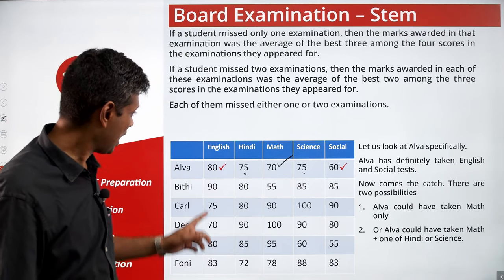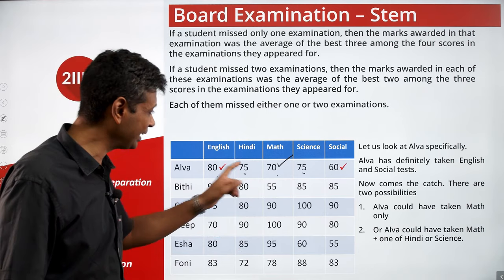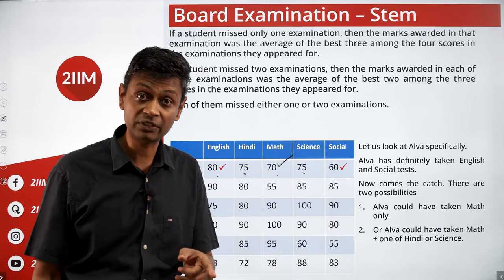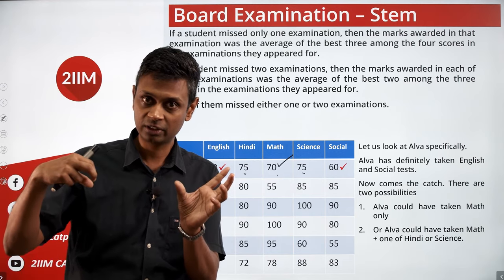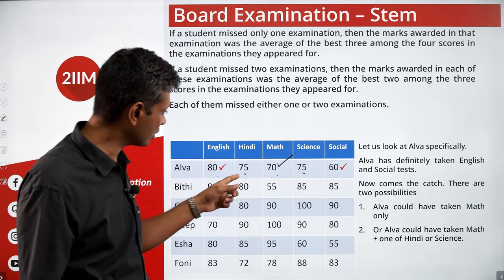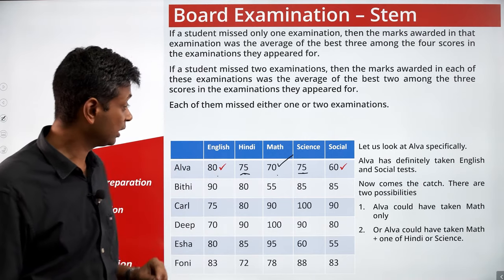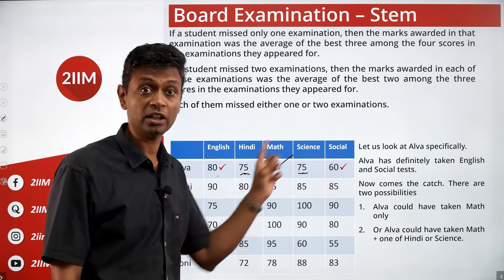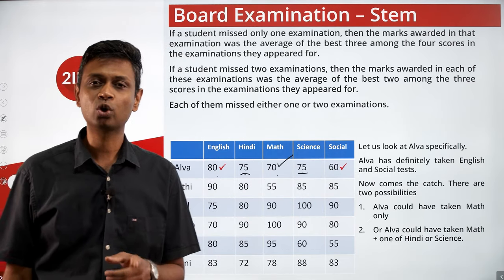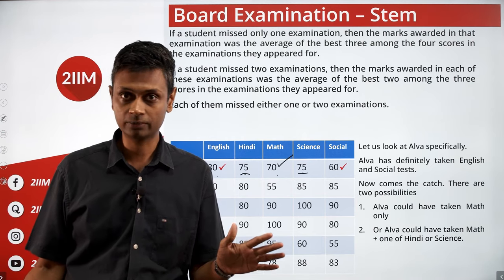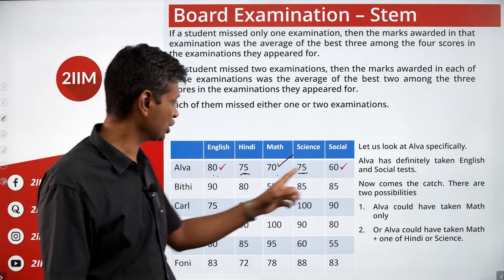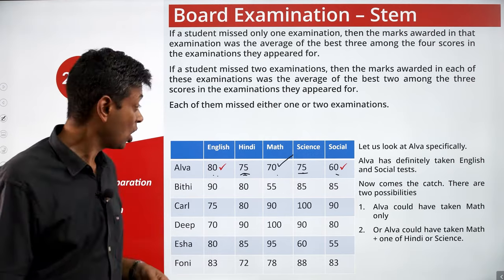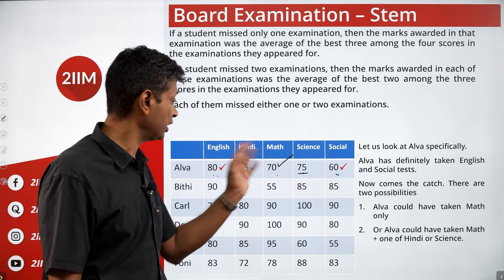The catch here is that Alba could have taken English, Math, and Hindi and Social, and the average of those three would also be 75. If two marks average to x, the average of those two and x will also be x. So with a 75 and a 75 in the table, we cannot say for sure whether Alba took only three tests or four. We can say Alba definitely took English and Social and Math, but she might have skipped both Hindi and Science, or taken one of them.